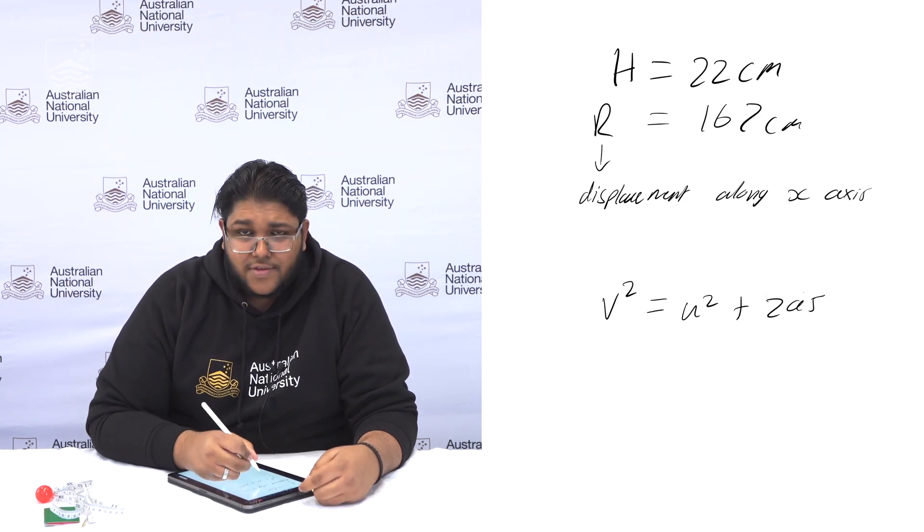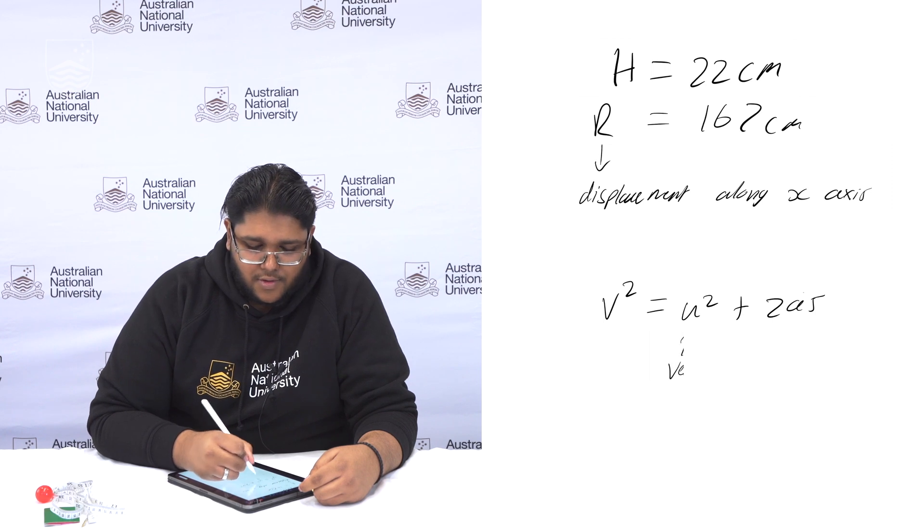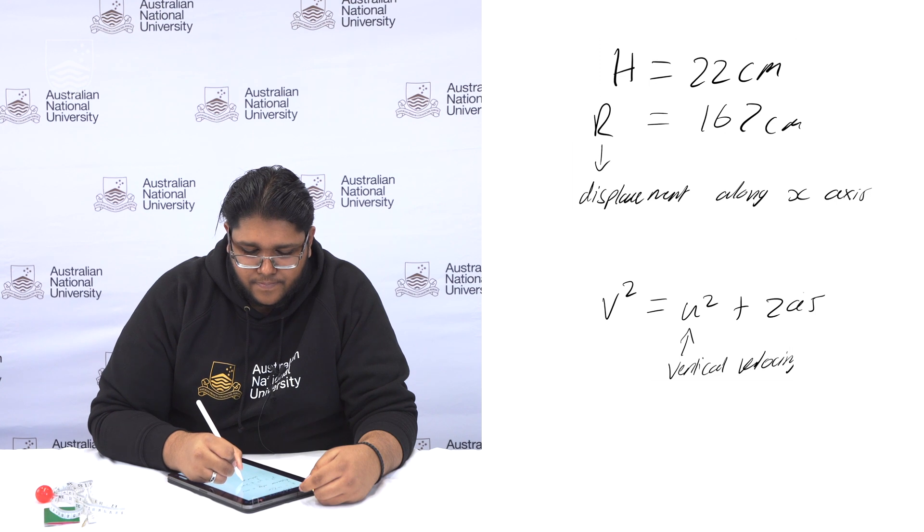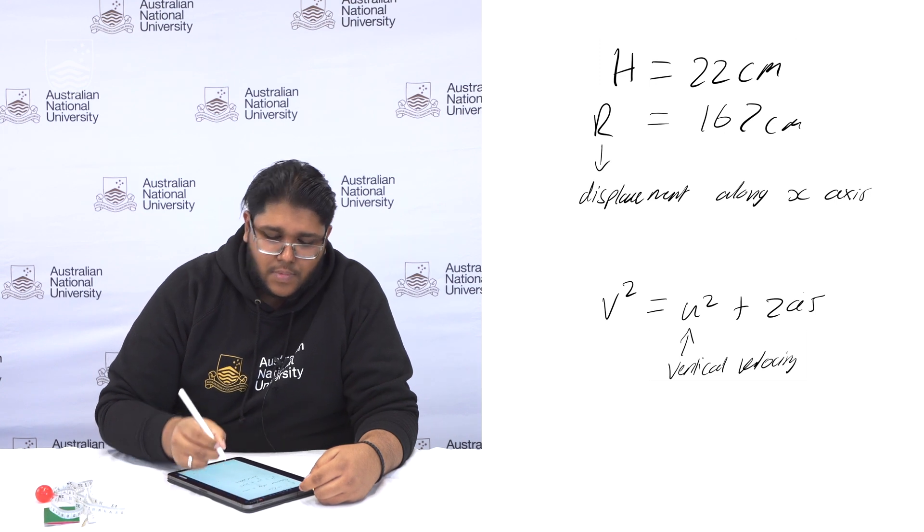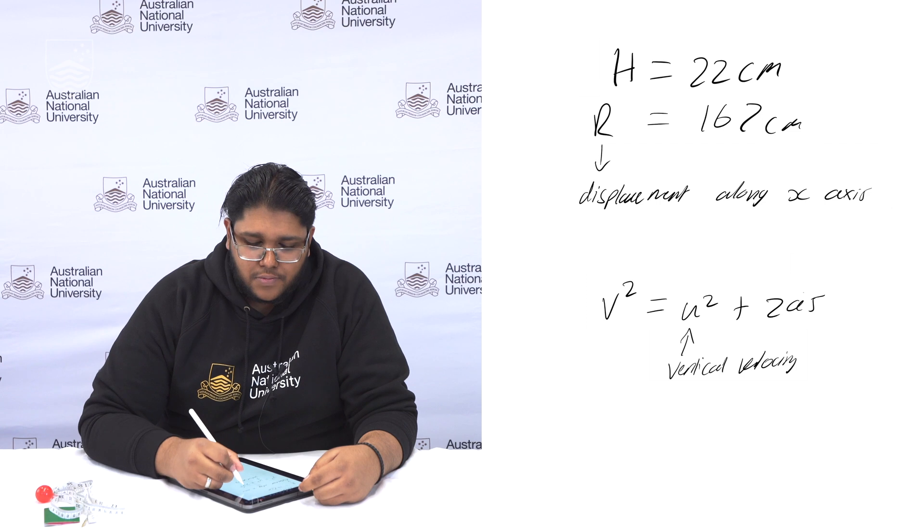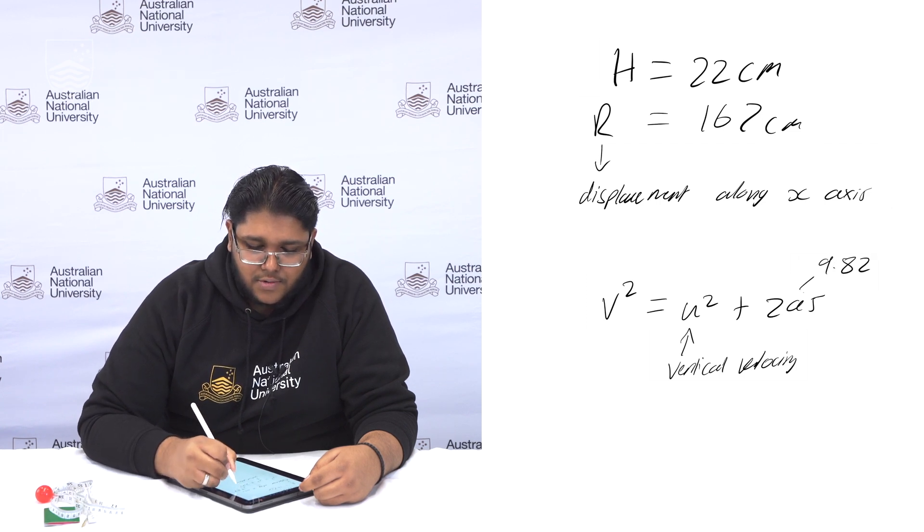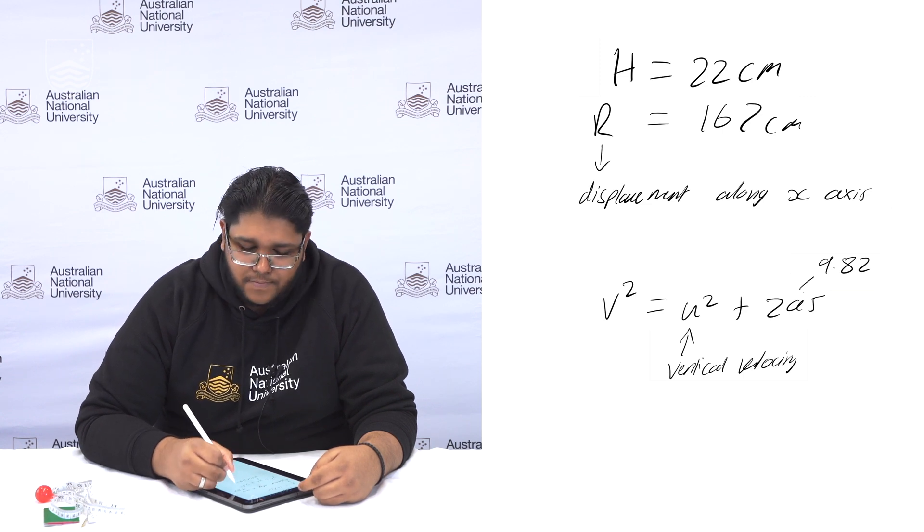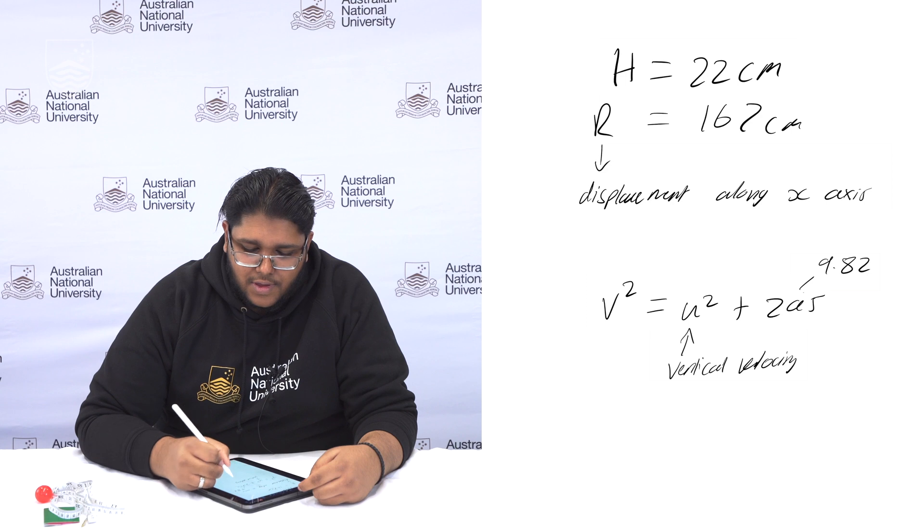In this case u is the vertical velocity, a is the acceleration which will be equal to 9.82 which is gravity's constant acceleration. And s will be the max height.